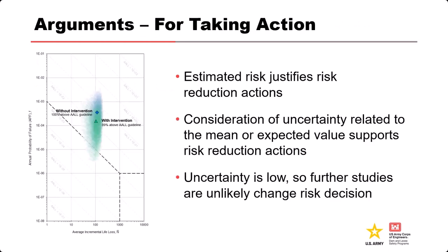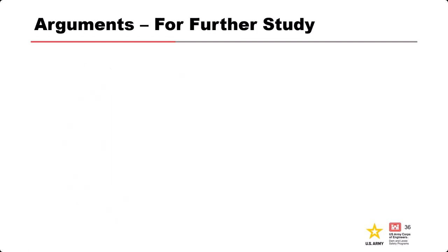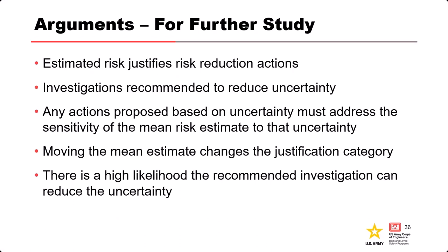When we are confident that the risk plots above the average annual life loss guideline, pursuing risk reduction actions is justified. We may have two orders of magnitude of uncertainty, but if so many iteration results plot above the guideline, we're probably not going to wait for further study. When confidence is low — such that additional information might change the perceived risk either up or down — we can evaluate the value of getting more information and make a risk-informed decision. Any action proposed based on uncertainty must address the sensitivity of the mean risk estimate to that uncertainty, and we don't want to spend more money investigating than it would cost to remediate.